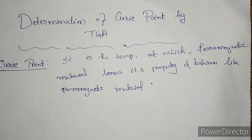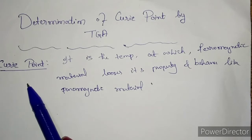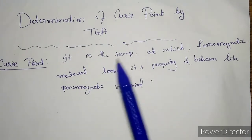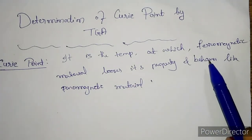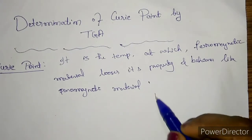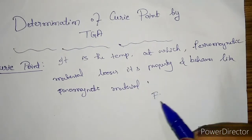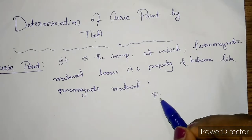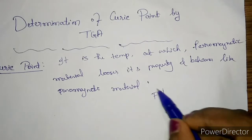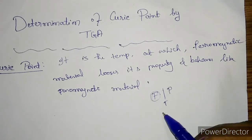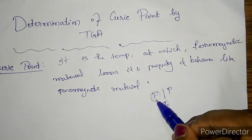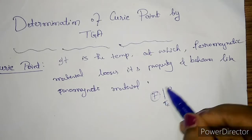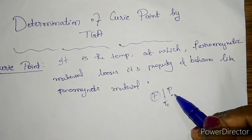We will see how the Curie temperature can be analyzed by means of TGA. The Curie point or the Curie temperature can be defined as the temperature at which the ferromagnetic material loses its property and behaves like a paramagnetic material. Whenever you heat the ferromagnetic material, at one particular temperature, it changes its property from ferromagnetic to paramagnetic. Below this critical temperature called the Curie temperature, the material behaves like a ferromagnetic material, and above this, the material behaves like a normal paramagnetic material.